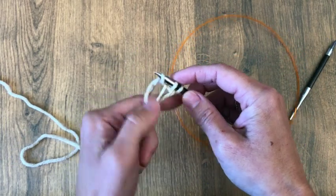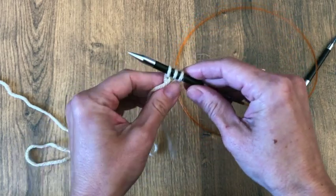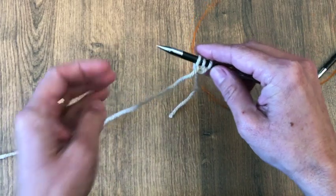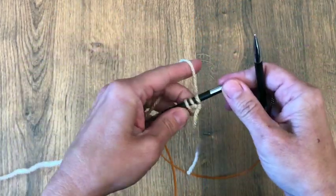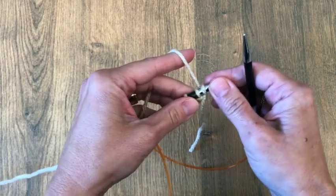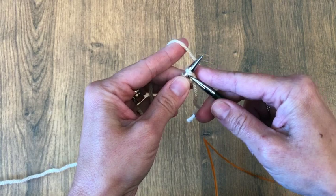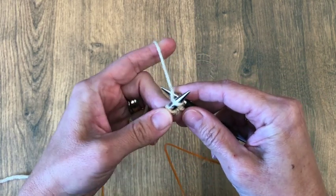So here is number three. You can use any cast on method for this easy scarf pattern. Okay, so now we are going to knit by going in this first stitch here toward the back, wrap the yarn over the needle.